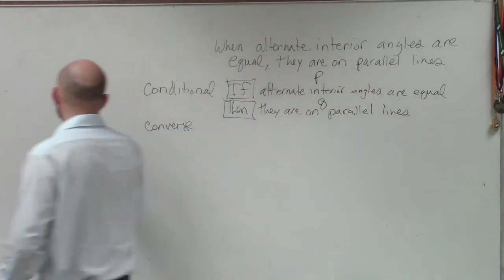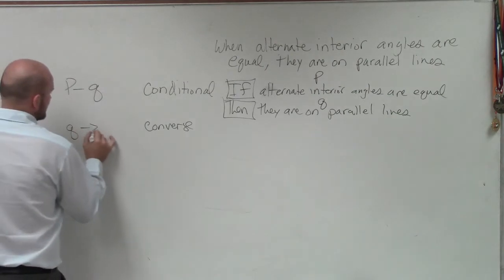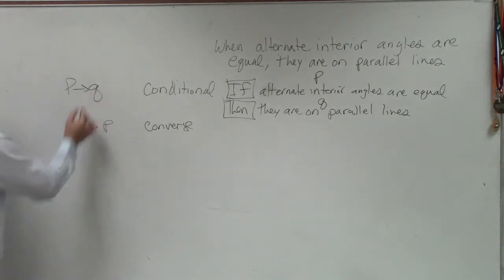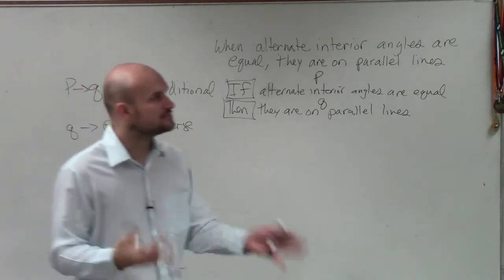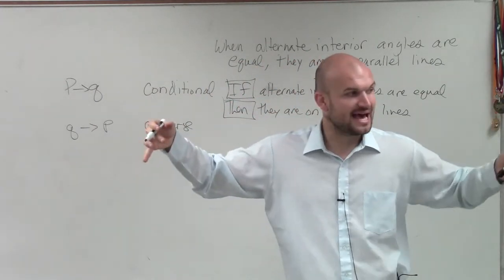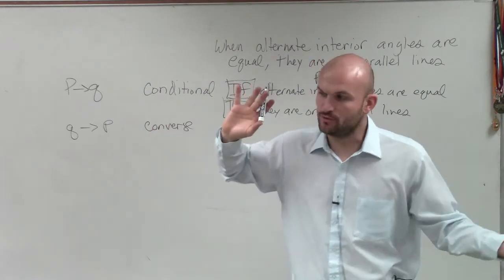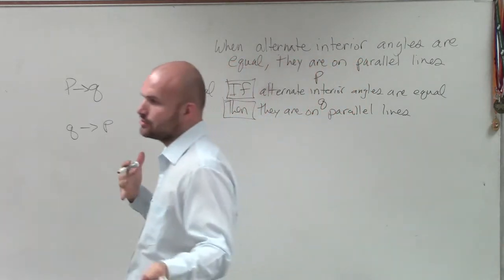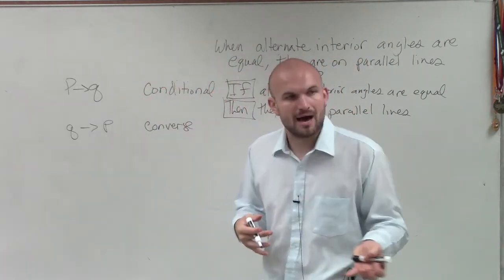Well, if I was going to use symbols, the converse is when we switch the p and the q. So we swap them. The if and the then stay the same. It's always if, it's always then. But now my p and my q, which is my hypothesis and my conclusion, those get swapped.